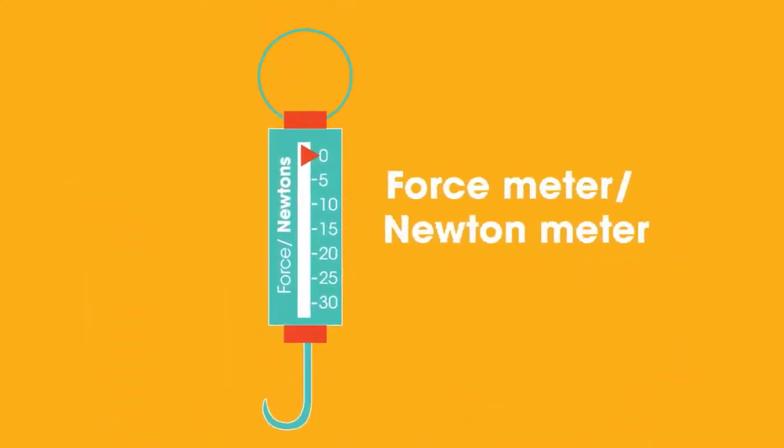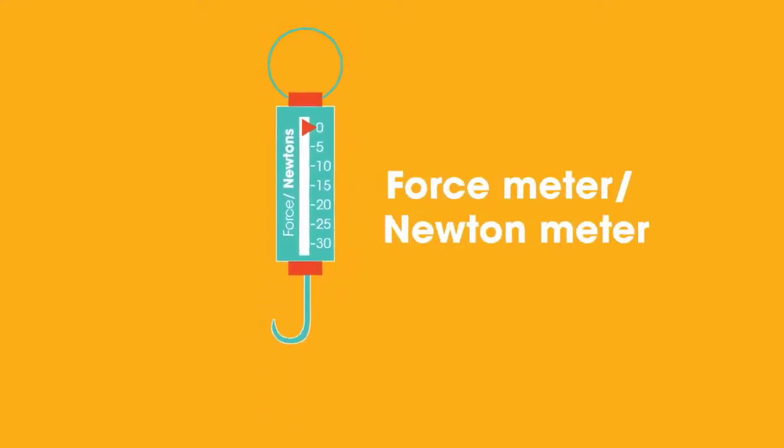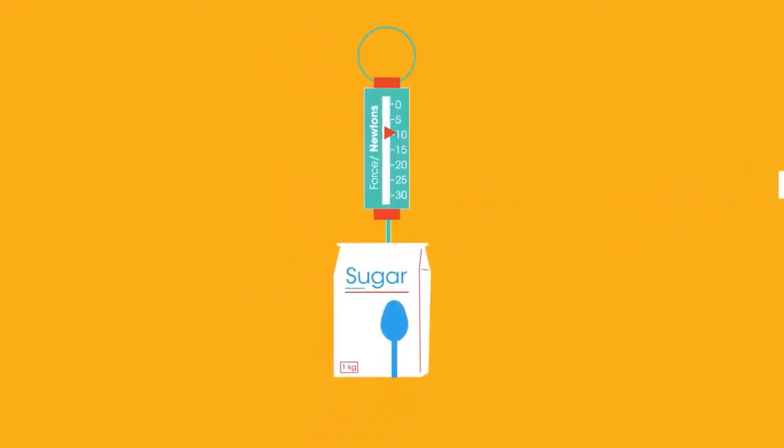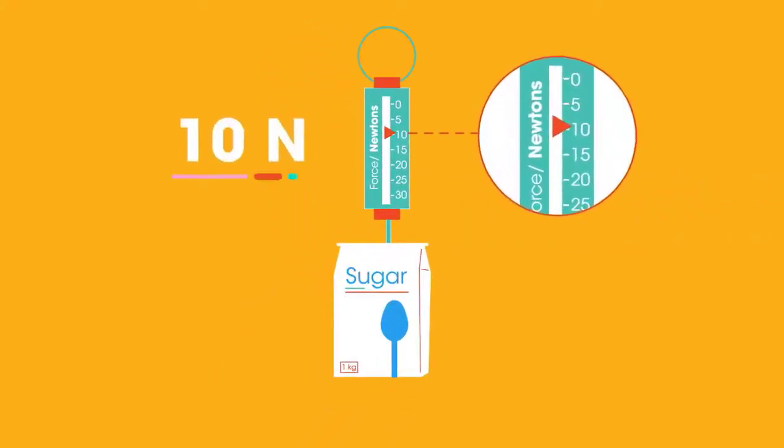To measure the weight, we need a spring balance or force meter. This is a force meter, or a newton meter. It shows the weight of something hung from it. Let's add the bag of sugar. It shows the weight is almost 10 newtons.